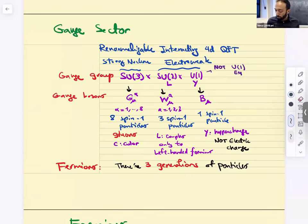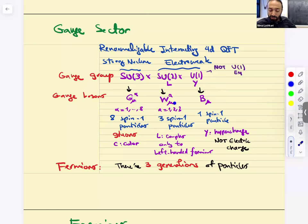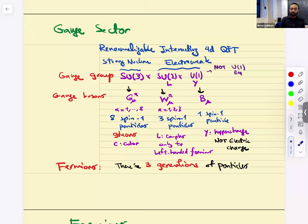The gauge sector of the Standard Model is a renormalizable interaction for quantum field theory. The gauge group is SU(3) × SU(2)_L × U(1)_Y. The gauge boson for hypercharge we denote B_mu. The gauge bosons for SU(2)_L are W_mu^a — there are three of them, because the generators of SU(2) in the adjoint representation are three. And G_mu^alpha — there are eight of these, called gluons, the gauge bosons corresponding to SU(3)_C color.